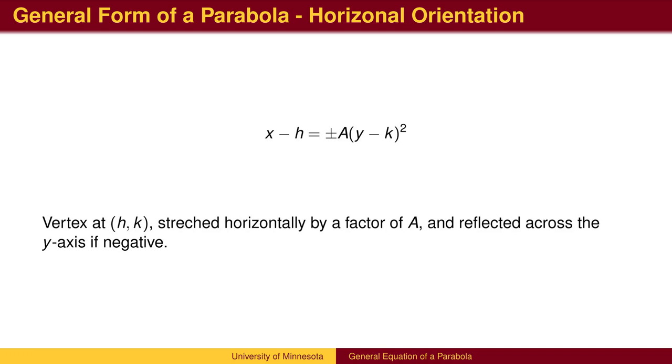For the parabola in the horizontal orientation, the standard form is similar. The h shifts the parabola in the x direction and the k shifts the graph in the y direction. A minus sign will reflect the graph horizontally so that it now points to the left. The a will stretch the graph horizontally, making the x distances larger by a factor of a.